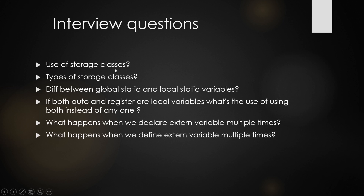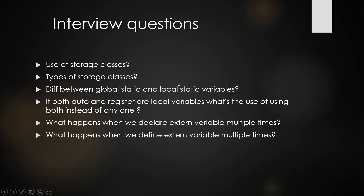To summarize the key points: storage classes describe the lifetime, scope, and storage location of variables. There are four types as discussed. The difference between global static and local static: a global static variable can only be used in the same file, not accessed from other files. A local static variable, even though it is static, is scoped within the block and its value is visible only within that scope.